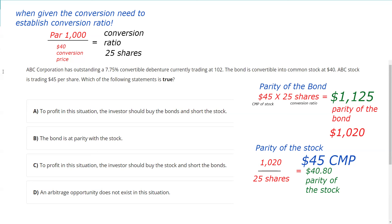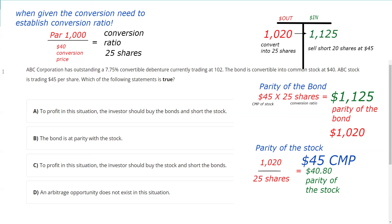So now let's see what our choices are. To profit in this situation, the investor should buy the bonds and short the stock. If I buy the bonds, I'm at $1,020, and that's convertible into 25 shares of stock. I short the 25 shares of stock at $45. That would work — I'd be profiting from the price discrepancy by converting the bond into 25 shares to cover my short position.